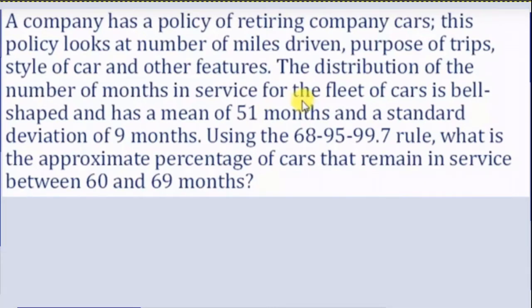You may have watched the other video that solved this problem using the 68, 95, 99.7 rule. That rule is sometimes called the empirical rule. The empirical rule states something about the area under a normal curve — any curve that's close to a normal curve will have 68 percent of the population within one standard deviation of the mean, 95 percent within two standard deviations, and 99.7 within three standard deviations.